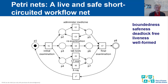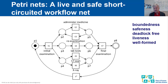Boundedness means that starting from some initial marking, the number of tokens on a particular place is limited — it cannot grow beyond a certain bound. If that holds for every place, the net is bounded. If the bound is k, we say it is k-bounded, meaning no place can have more than k tokens. Safeness is a special kind of boundedness where k equals one, so a place can never have two tokens.